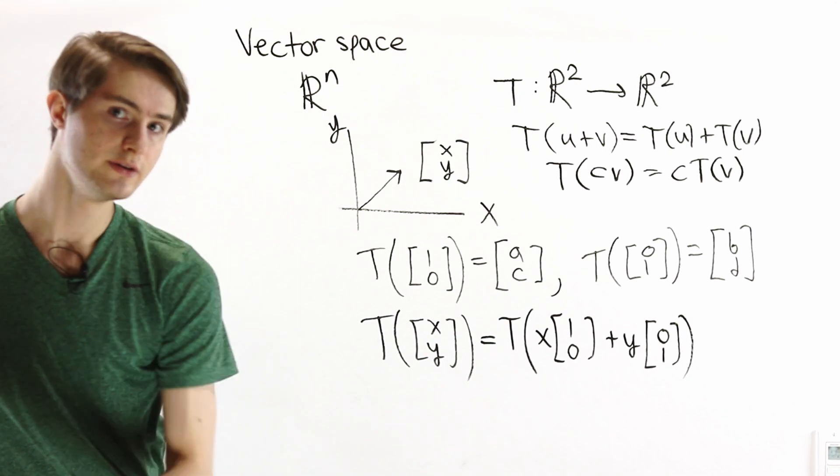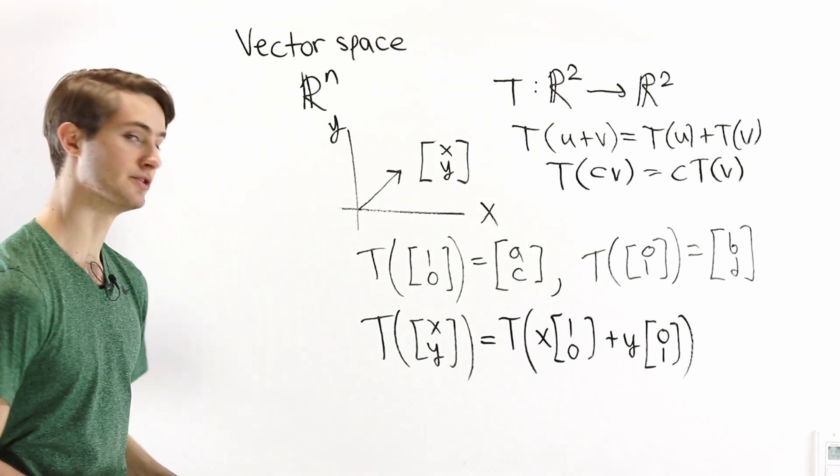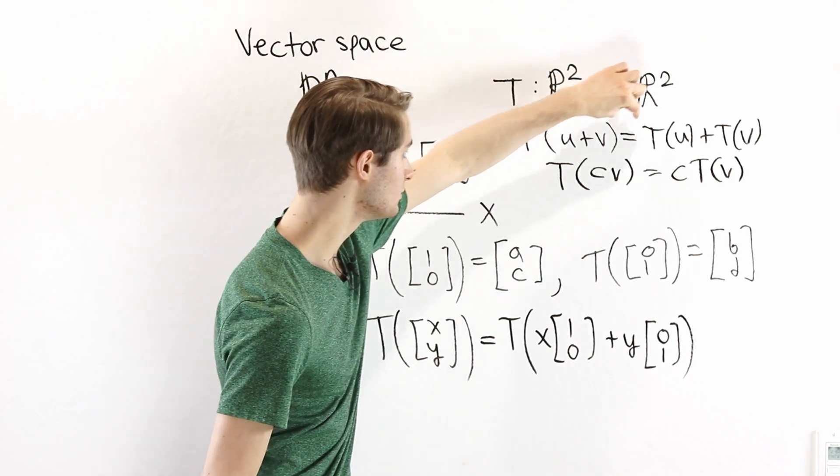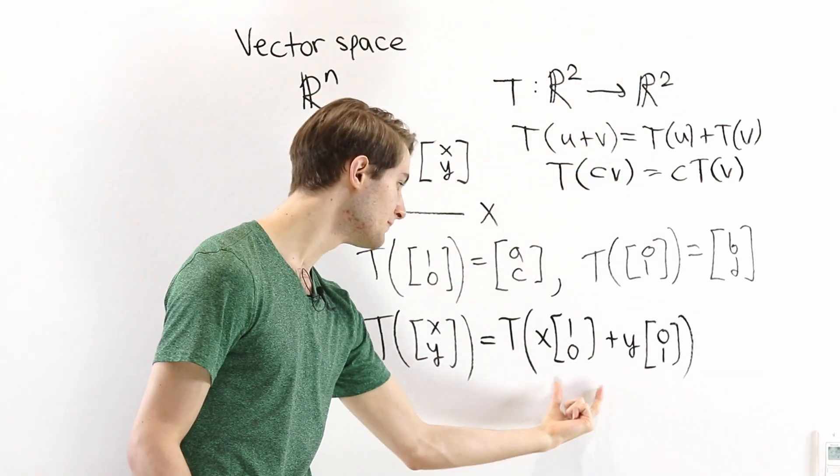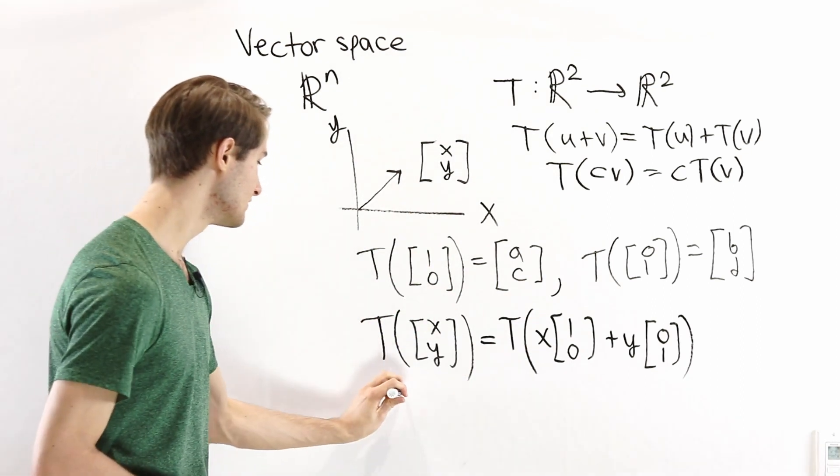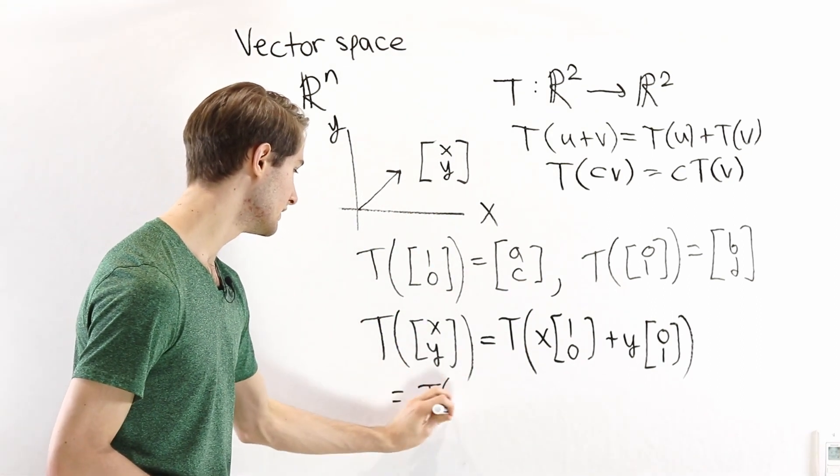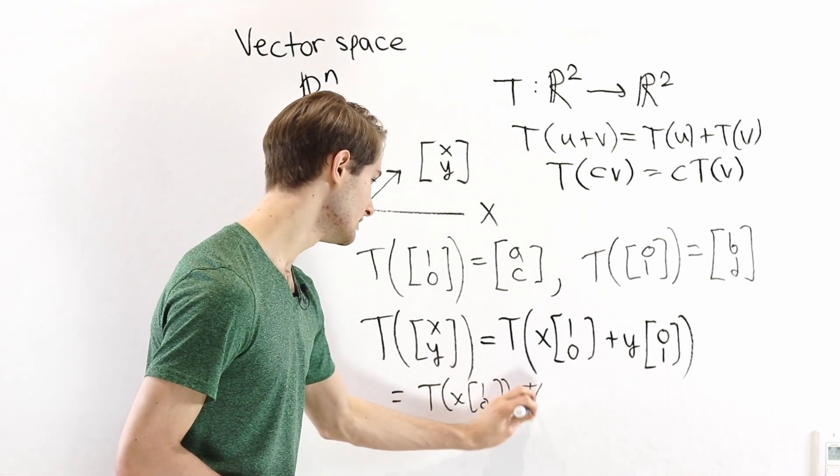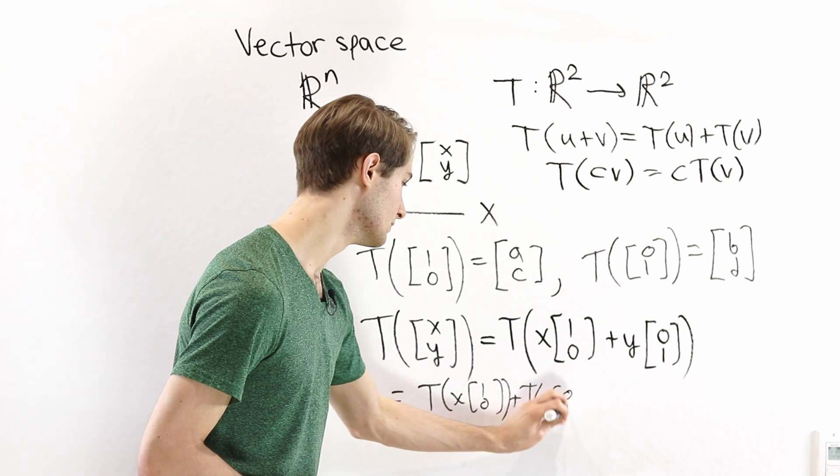But we know T is a linear transformation. So the first thing we can do is say T of u plus v equals T of u plus T of v. We can split these 2 up into 2 separate evaluations. So this is going to be equal to T of x times 1, 0 plus T of y times 0, 1.